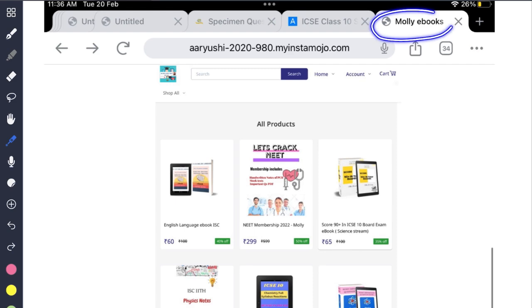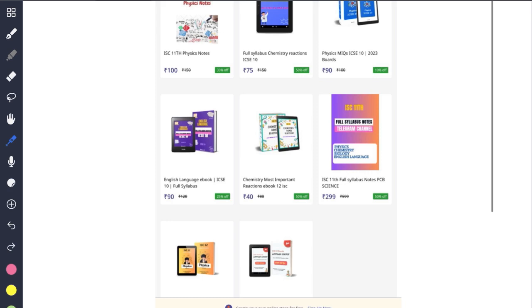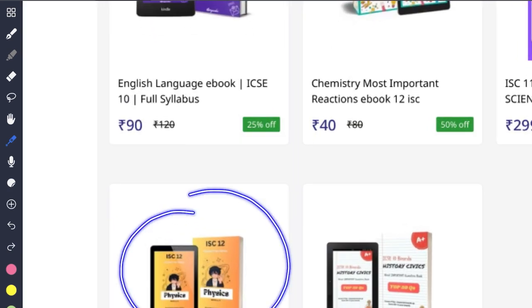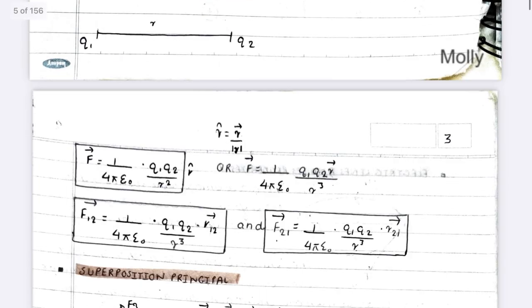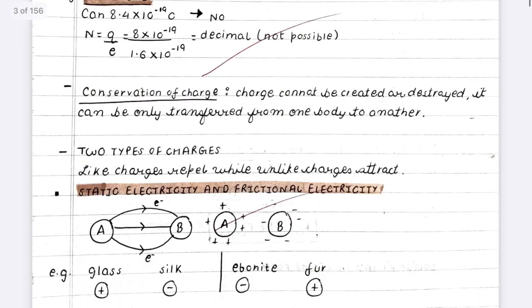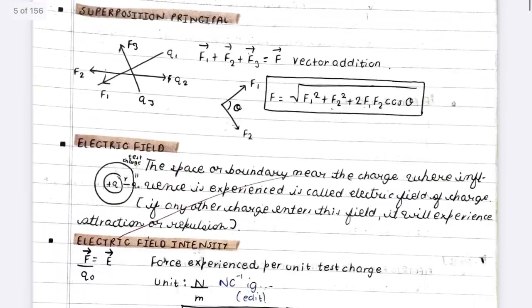You can also visit Molly Ebooks in which there are many ebooks for class 12th and 10th ICSE ISC boards respectively. This is full syllabus physics handwritten notes. In this all the definitions, diagrams, derivations and numericals have been covered. You can buy this from the link in the description box.